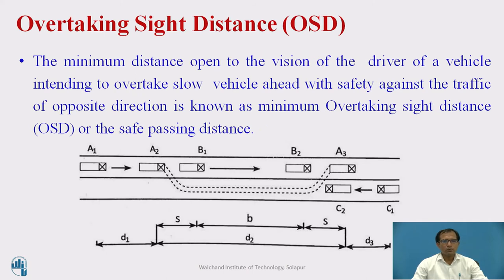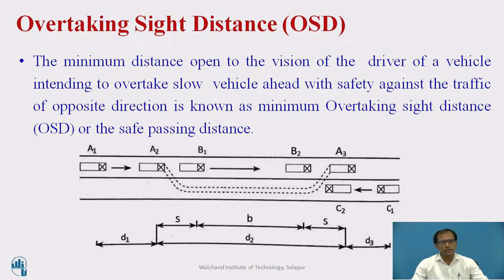Before we go into the overtaking sight distance, let us understand what it is. It is the minimum distance open to the vision of a driver of a vehicle intending to overtake a slow vehicle ahead, with safety against traffic coming from the opposite direction. This is known as the minimum overtaking sight distance.